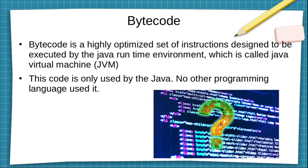Bytecode is a highly optimized set of instructions designed to be executed by the Java runtime environment, which is called the Java Virtual Machine. Bytecode is a specific term used for Java only. It is a special type of code used by the JVM — the JVM interprets this bytecode line by line and converts it into machine code. No other programming language uses bytecode.